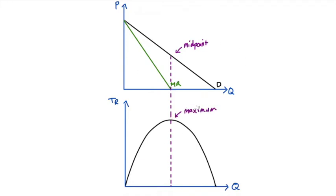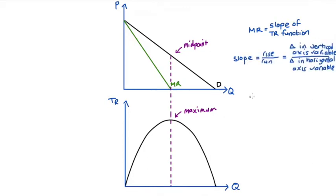It's important to note that marginal revenue is actually equal to the slope of the total revenue function. Recall that slope is equal to rise over run — the change in the vertical axis variable divided by the change in the horizontal axis variable. Marginal revenue, as the derivative of total revenue with respect to Q, gives us exactly that same ratio. As we increase the quantity produced, our total revenue initially increases, though it does so at a decreasing rate — each additional unit adds to total revenue, but does so at a decreasing rate.